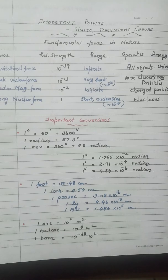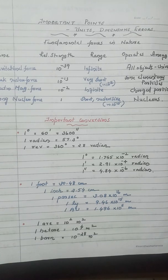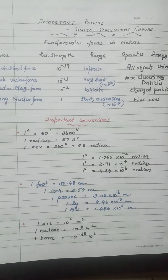While solving problems, keep in mind some important conversions regarding angles. One degree equals 60 minutes or 3600 seconds — each degree is divided into 60 minutes and each minute into 60 seconds. While converting from radian to degree: 360 degrees equals 2π radian, and one radian equals 57.3 degrees.